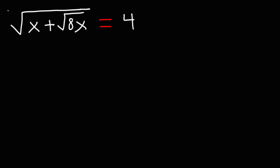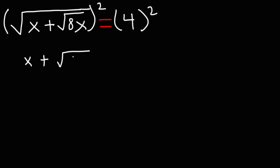What I recommend doing in the first step is taking the square of both sides. This will get rid of the outer square root function. So on the left, we're just going to have x plus the square root of 8x. And on the right, 4 squared, which is 4 times 4, so that's 16.